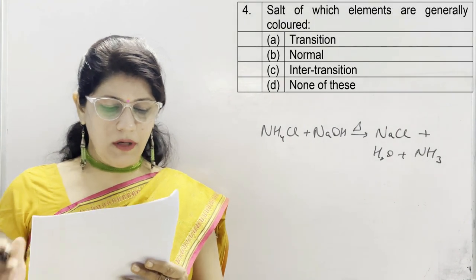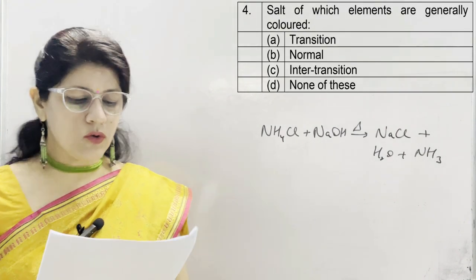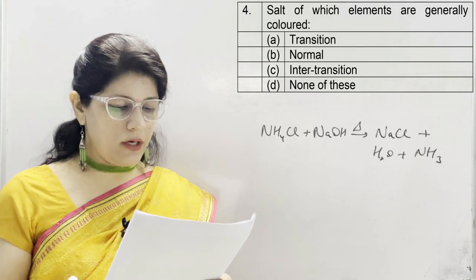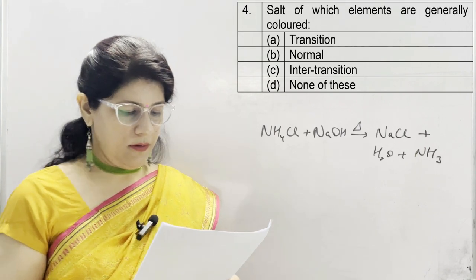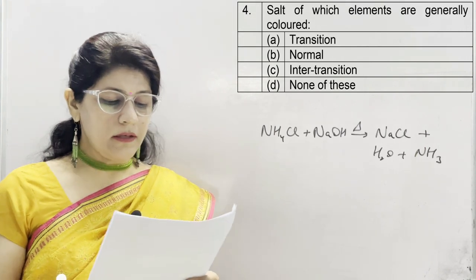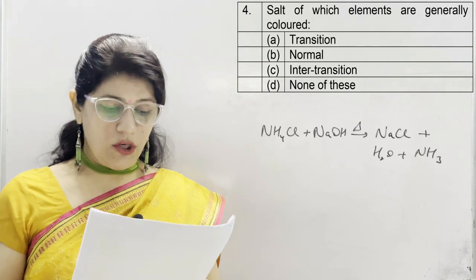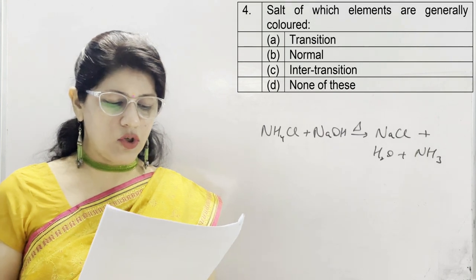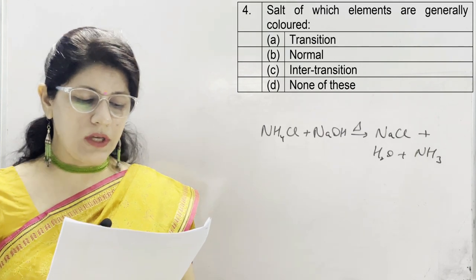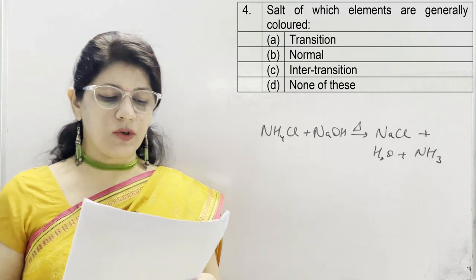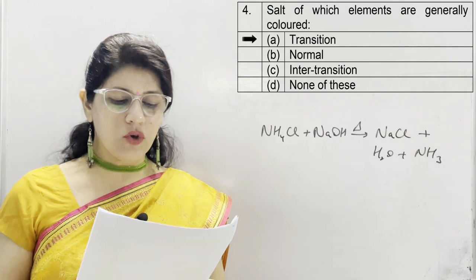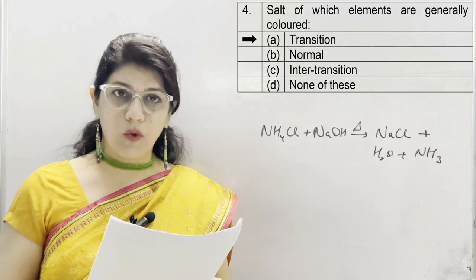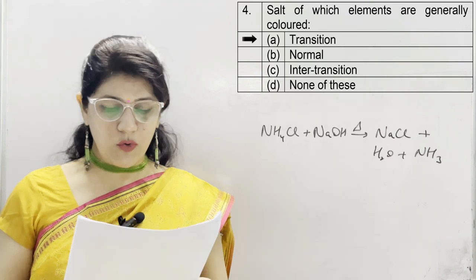In question 4, salts of which elements are generally colored? Option A is transition, B is normal, C is inner transition, and D is none of these. The correct option is A — transition metals, meaning group numbers 3 to 12.